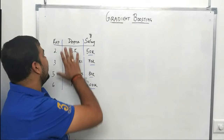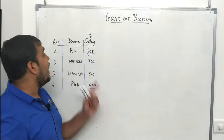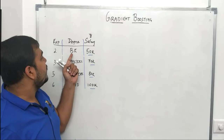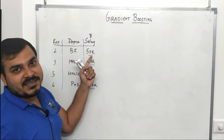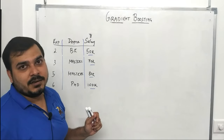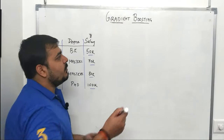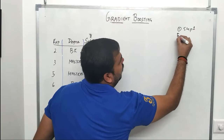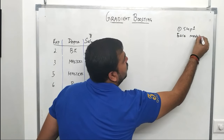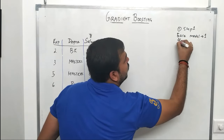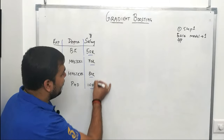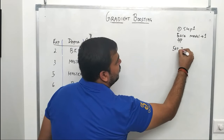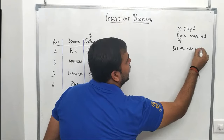I have a dataset where the independent features are experience and degree, and the dependent feature is salary. The first step is to compute the base model, which gives one output — the average of all salary values. So I compute 50 plus 70 plus 80 plus 100 divided by 4.